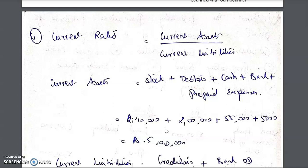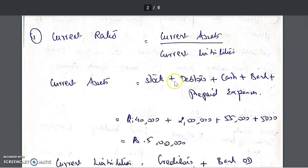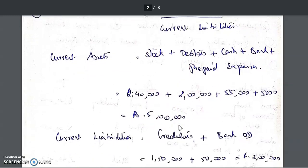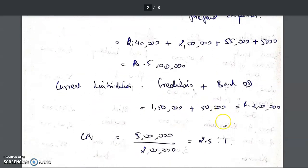Current assets include stock, debtors, bills receivable, prepaid expenses, cash in hand, bank, and marketable securities. Marketable securities are current assets because you can convert them into money within one year — they are not long-term investments. From the given sum, the current assets are stock, debtors, cash, bank, and prepaid expenses, which add up to 5 lakh.